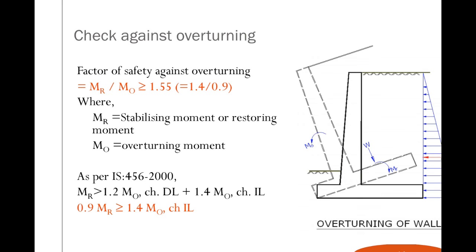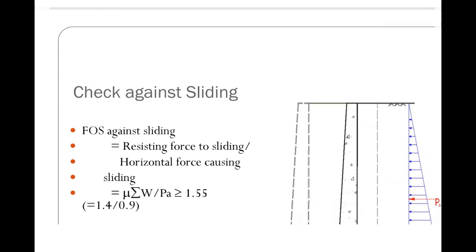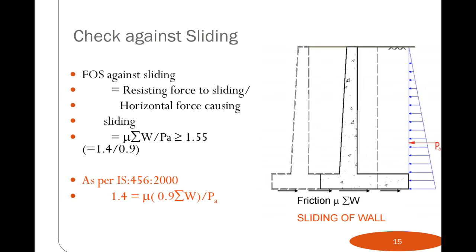For check against overturning, the factor of safety = Mr / Mo ≥ 1.5, where Mr is the stabilizing or restoring moment and Mo is the overturning moment. As per IS 456, Mr must be greater than 1.2 × Mo. For check against sliding, the factor of safety = resisting force to sliding / horizontal force causing sliding = μ × ΣW / Pa ≥ 1.5. As per IS 456: 1.4 = μ × 0.9 × ΣW / Pa.